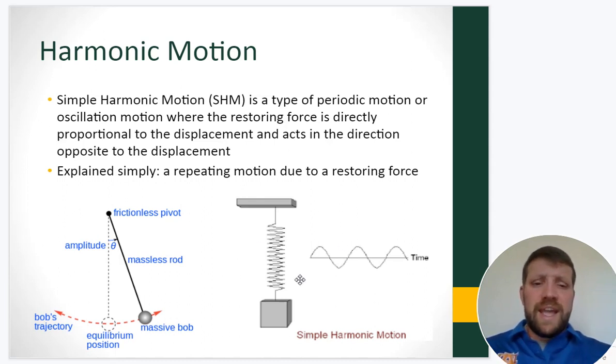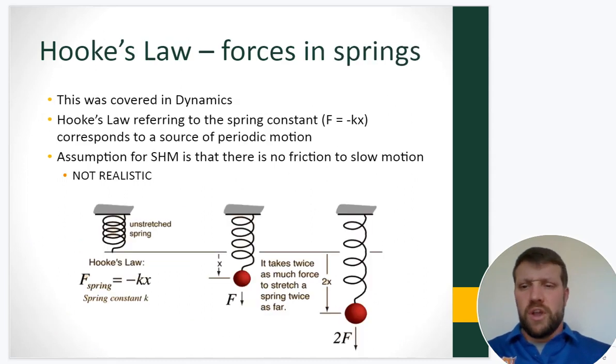A similar thing can be looked at in springs. So if a spring were just hanging here, it wouldn't necessarily be gravity that would be causing the restoring force, but if we pull down on this object that's hanging from a spring, then it would go through a similar repeating motion due to the restoring force of the spring and Hooke's law. So a quick reminder of what Hooke's law is. We did cover this in dynamics, but that's been a long time at this point. Hooke's law refers to the spring constant corresponding to the source of periodic motion in this case. Some springs are going to be stronger than others, and thus that K value will be stronger in them, and so we'll have a different restoring force in the spring.